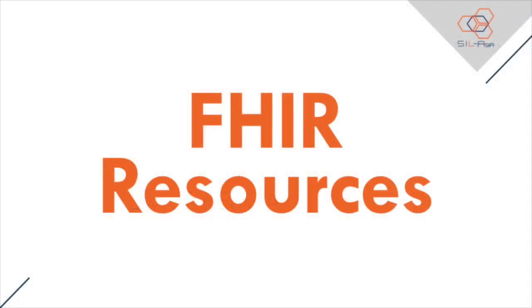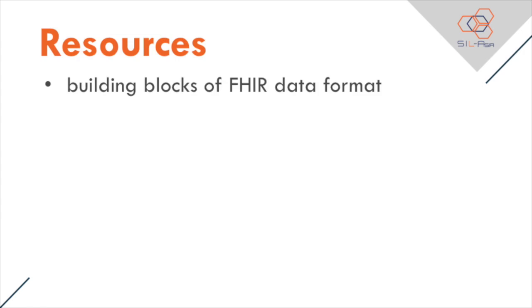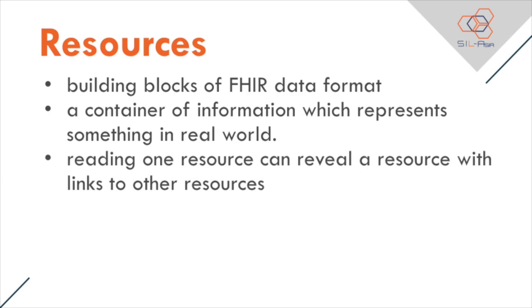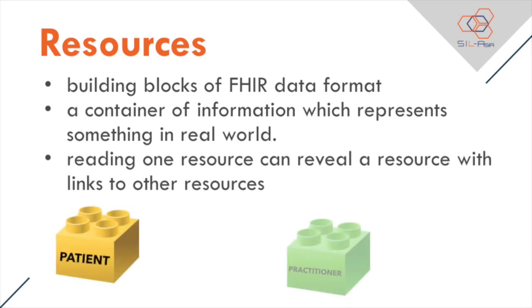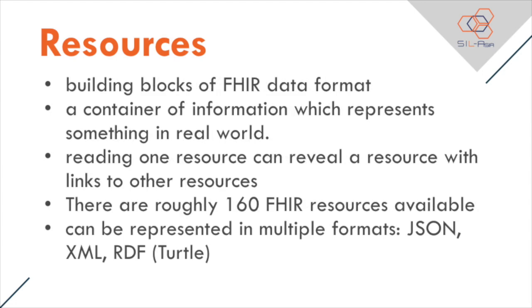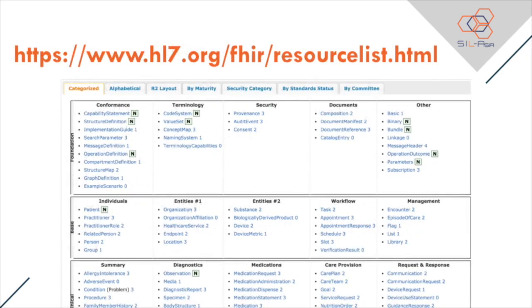Let's start with a quick recap on FHIR resources. What are these FHIR resources? FHIR resources are the building blocks of FHIR. A resource is a container of information which represents something in the real world. Reading one resource can reveal links to other resources. There are roughly 160 FHIR resources available and can be checked in the FHIR specification. They can be represented in multiple formats like JSON, XML, and Turtle. Most of the resources can be found in the resource list at www.hl7.org/fhir/resourcelist.html.